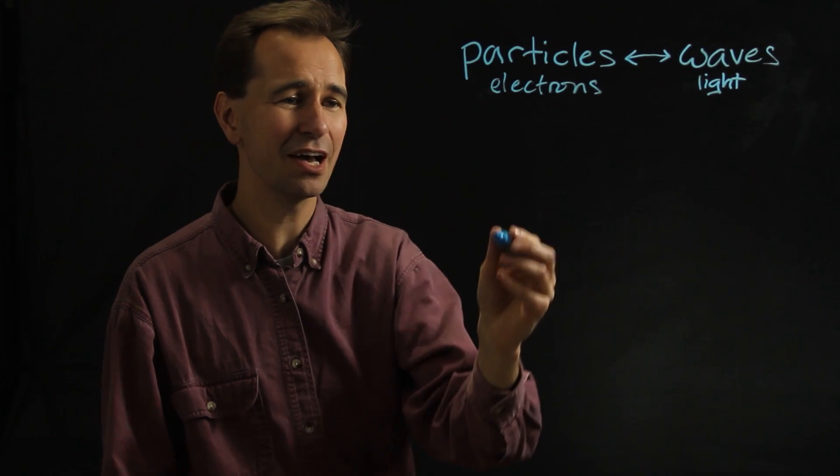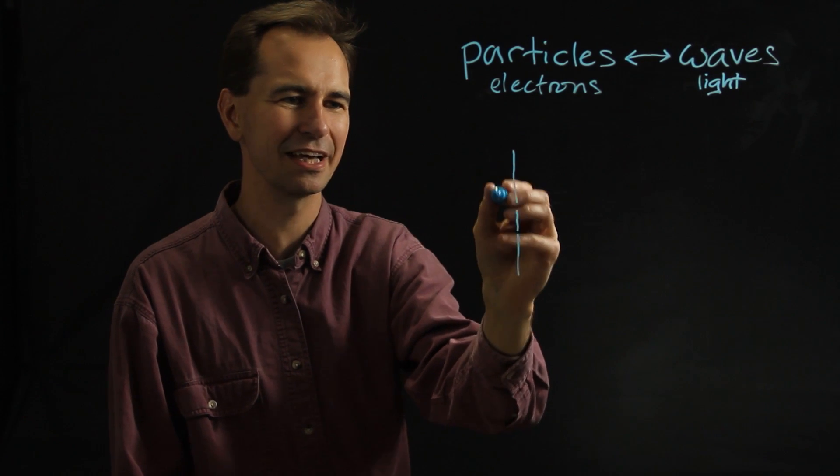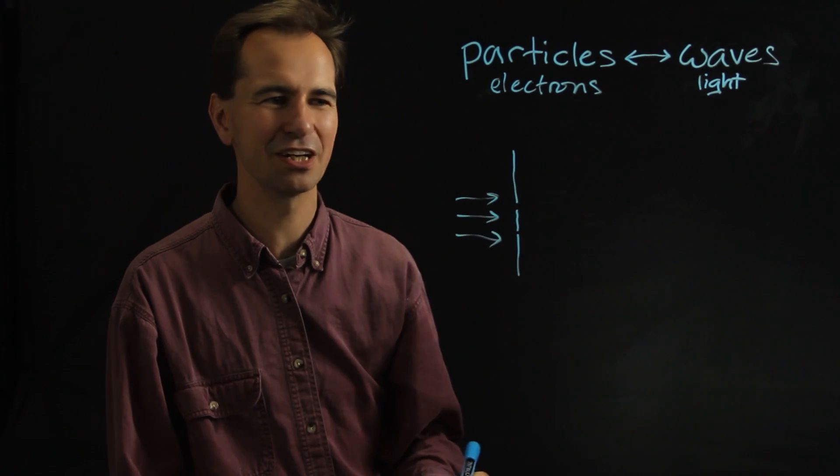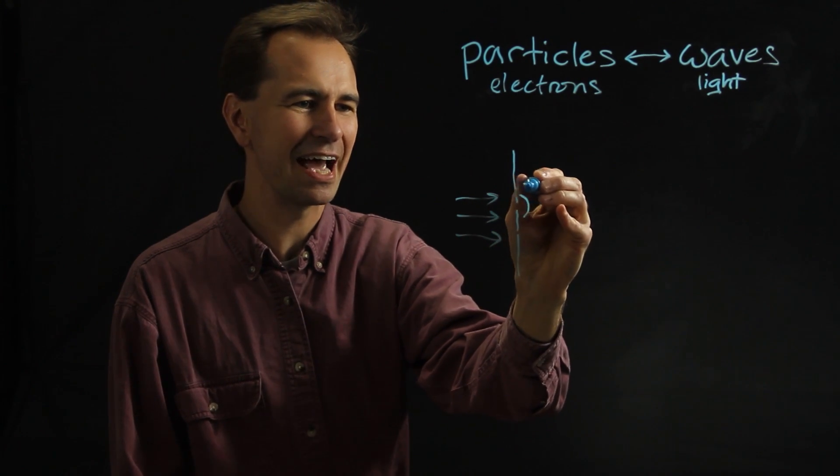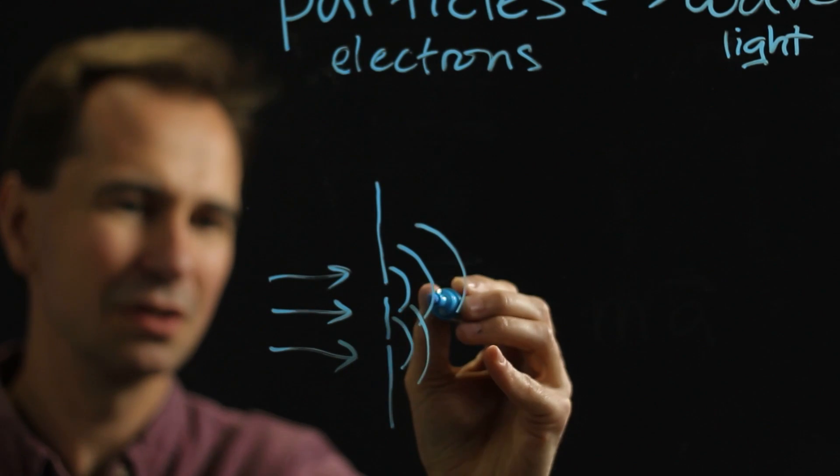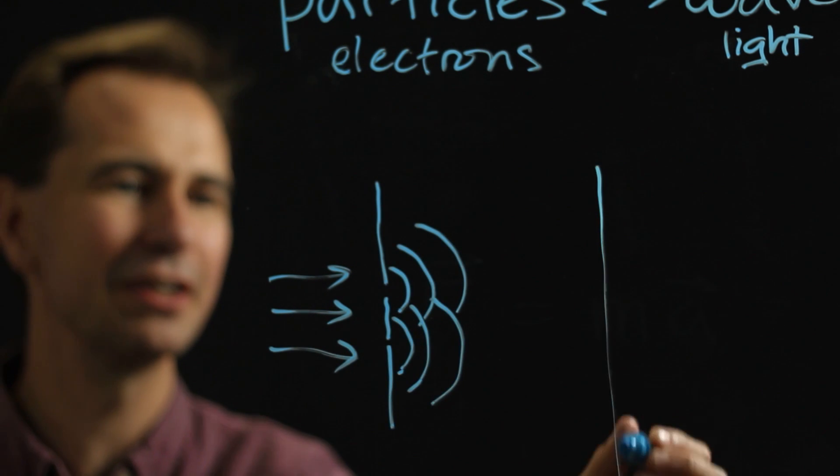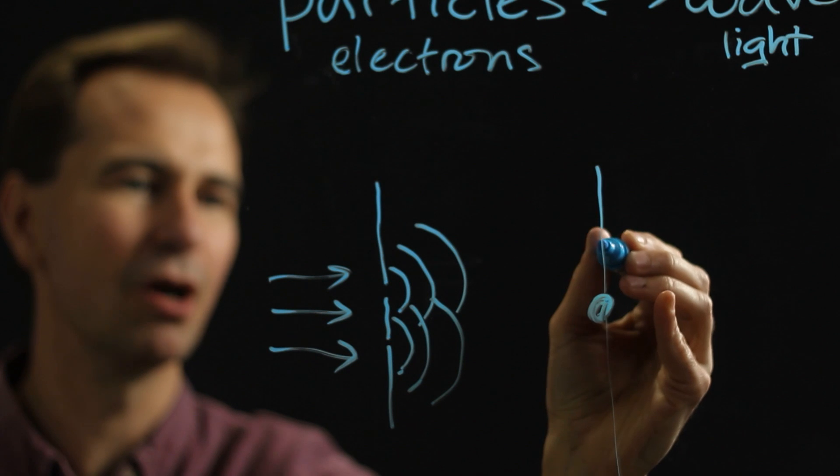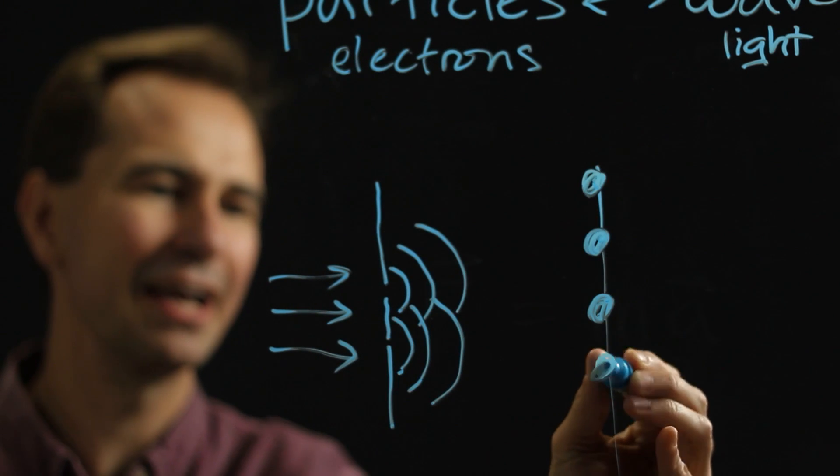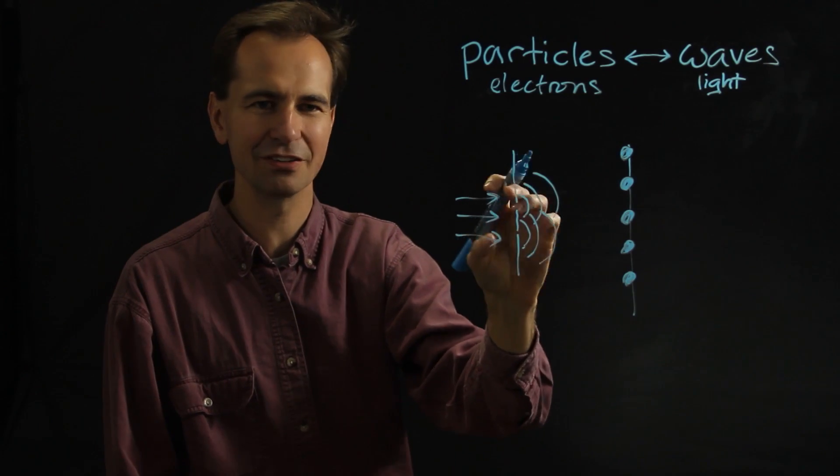If you take light and a coherent beam of light and shine it on two slits that are close together, so here's a beam of light shining on these two slits. Each slit acts like it emits its own beam of light. And if you have a screen over here, you'll see a bright spot and a dark spot and a bright spot, and you'll see a pattern like this. And you can actually predict this based on the fact that light is a wave.